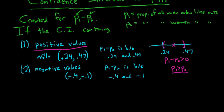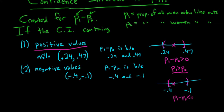Drawing that on a number line: here's negative .4 and here's negative .1. P1 minus P2 is somewhere in this open interval, so it's negative — less than zero. That means P1 is less than P2. If you have only negative values, your first proportion is smaller: the proportion of all men who like cats is less than the proportion of all women who like cats.